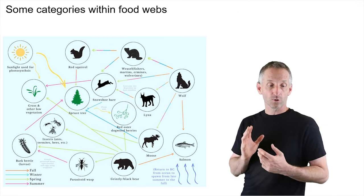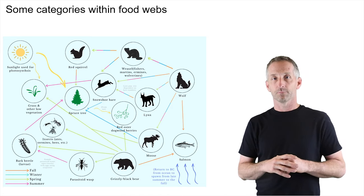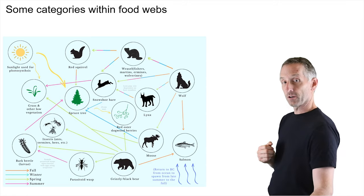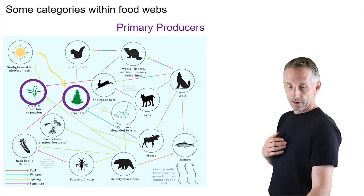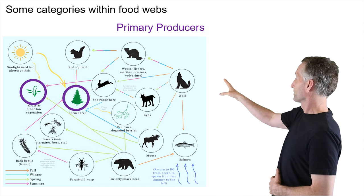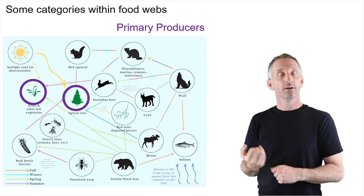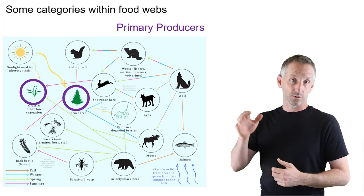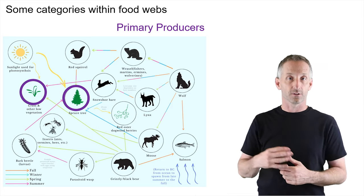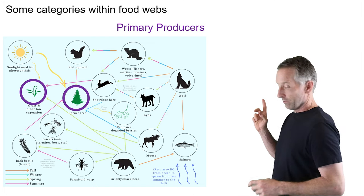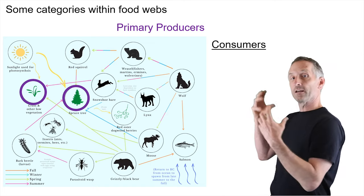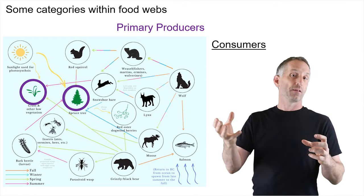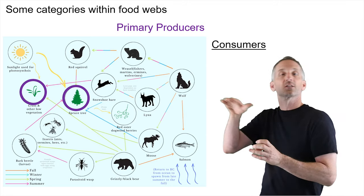On these food webs, you can also think about different categories of organism that represent the nature of their interactions — in particular, who or what they consume. You have primary producers that obtain their energy from the sun. In other ecosystems, primary producers can sometimes receive inputs from chemical sources, such as from hot vents on the bottom of the ocean. There are also a series of consumers that feed on other organisms, not obtaining their energy directly from the sun, but sometimes several steps removed.